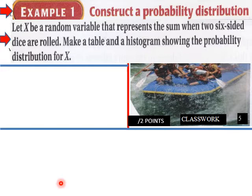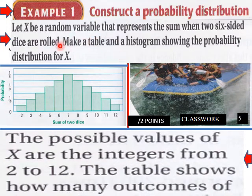Okay, construct a probability distribution. Let X be a random variable that represents the sum when two six-sided dice are rolled. Make a table and a histogram showing the probability distribution for X. Here they are, here's your histogram. You go from zero to twelve, the sum of two dice. There are no zeros, but there is a two and there is a twelve, and then everything in between.